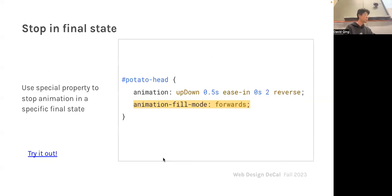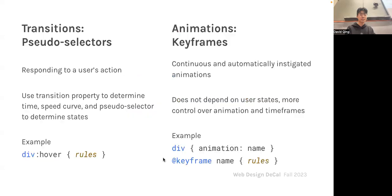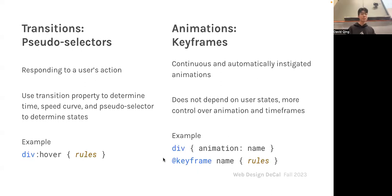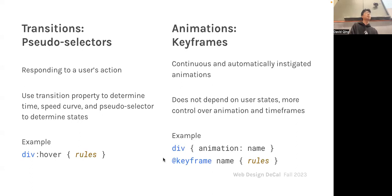`fill-mode` is a special property — it tells CSS where you want the animation to stop if you want it to end in a state other than the final state. As a review: the key distinction between pseudo-selectors and keyframe animations is that pseudo-selectors respond to user actions, whereas CSS animations run continuously and automatically on their own. Otherwise their syntax and use are similar.